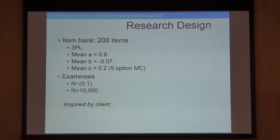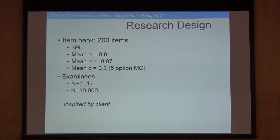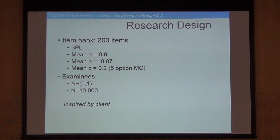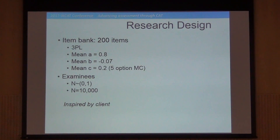The research design was inspired by a client who brought up this question. I tried to match their real-life situation as closely as possible, because it's not only an answer to the question for them, but it represents a real-life situation. They had a bank of items, so I created a bank of 200 items using a three-parameter IRT model with a mean discrimination parameter of 0.8, mean difficulty of 0.0, and a mean guessing parameter of approximately 0.2.